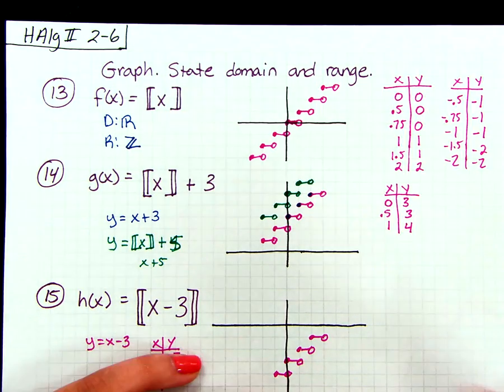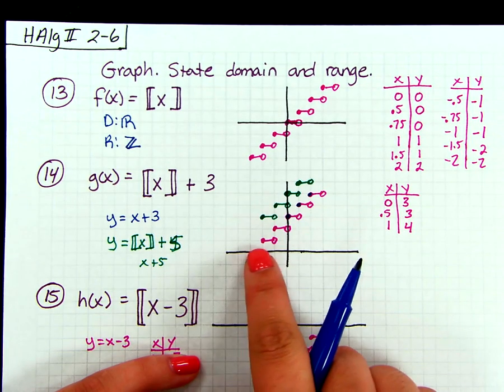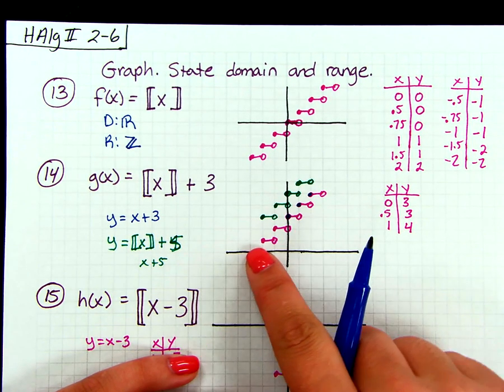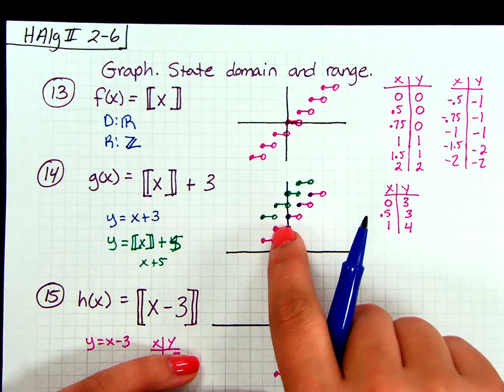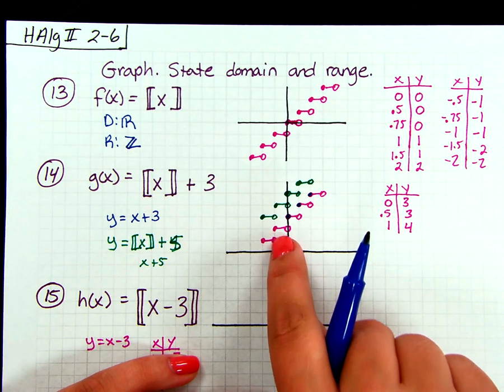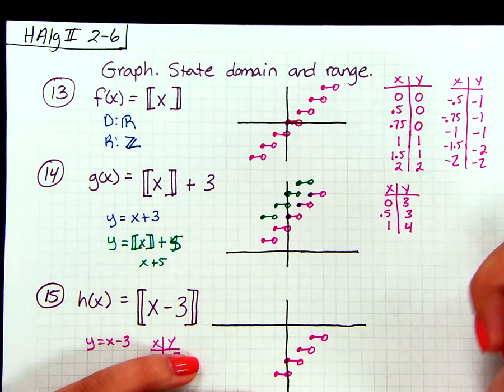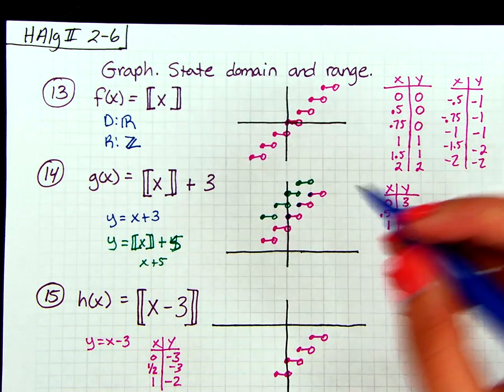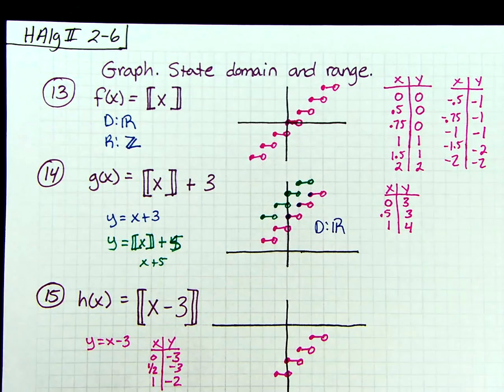So even on this one, when I'm looking at this, again, as I'm tracing, I'm going from the negatives, and we're covering all these x's in between, we jump up to a closed circle, so this x value still counts. Tracing over, jumping up, tracing over, jumping up, and we're going to continue that pattern forever. So again, the domain for this one has to be all real numbers.